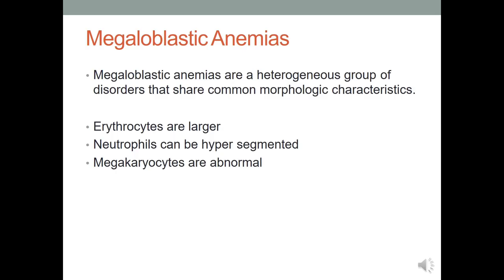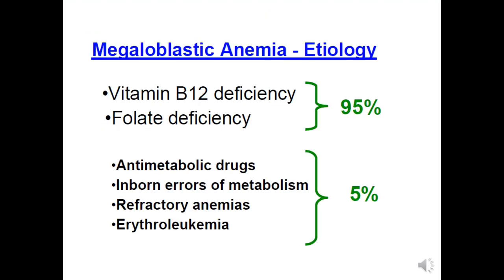Megaloblastic anemia is a heterogeneous group of disorders sharing common morphological characteristics: erythrocytes are larger, neutrophils can be hypersegmented, and megaloblasts in the bone marrow are abnormal. The most common causes of megaloblastic anemia are vitamin B12 deficiency and folate deficiency, accounting for 95%, and less than 5% are other causes.